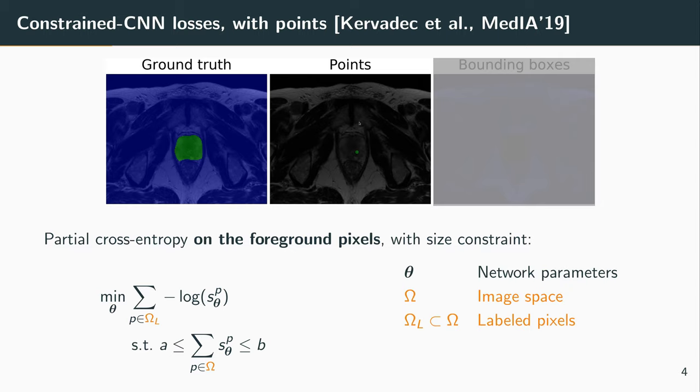Omega is the image space, the coordinates of all pixels. And omega L is a subset of omega, which contains only those labeled pixels. So in that case, all the green pixels, and only those. P is a pixel.